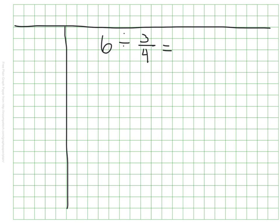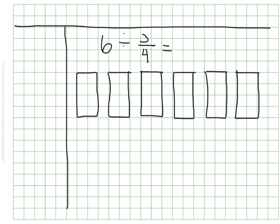To find my answer this first time, I'm going to use a model. I know I'm starting with 6, so I'm going to draw 6 wholes. Our goal is to find out how many 3 fourths there are in these 6 wholes. I'm going to start by breaking my wholes into these 4ths, because I know I'm trying to figure out groups of 4ths.